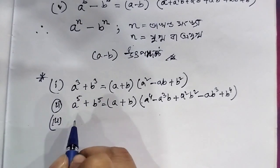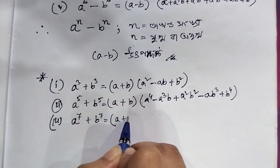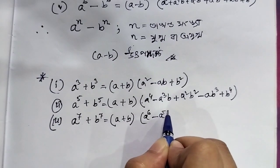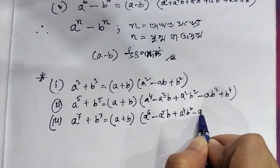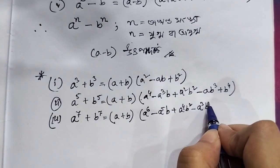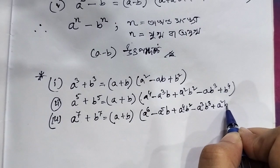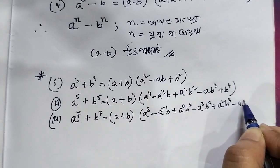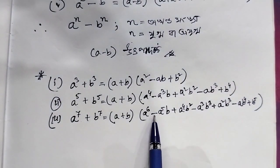a to the power 6 formula. If we do a to the power 7 minus b to the power 7 with (a plus b): a to the power 6 minus a to the power 5 b plus a to the power 4 b square minus a to the power 3 b cube plus a square b cube minus ab to the power 4 plus b to the power 5. This is plus and this is minus.